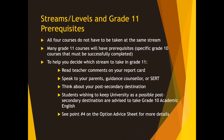You should also speak to your parents, your guidance counsellor, or your special education resource teacher, and think about your post-secondary destination — where are you thinking of going after high school? Students wishing to keep the university option open are advised to take Grade 10 academic English, because all university programs in Ontario require university-level English, and Grade 10 academic English will be the prerequisite. You can read more about this on question number four of your option advice sheet.